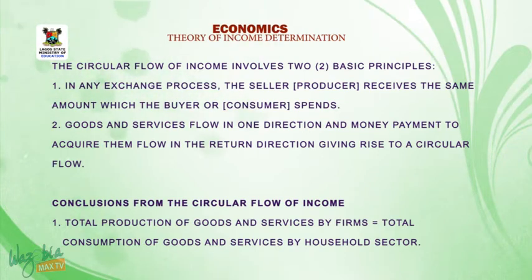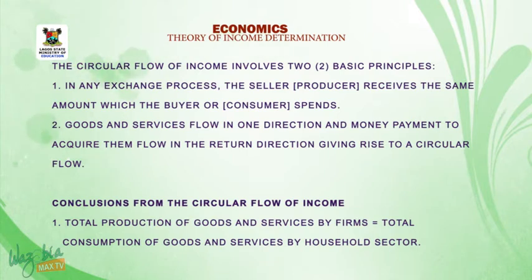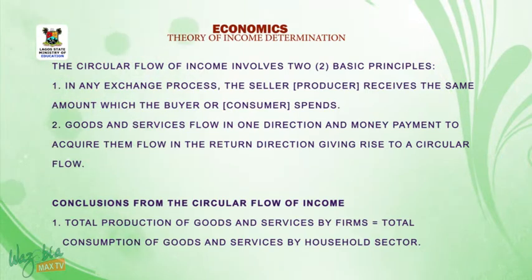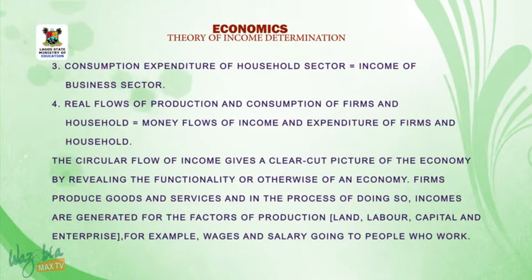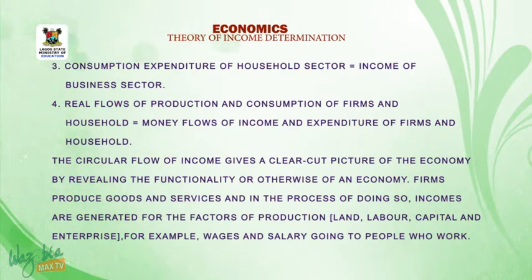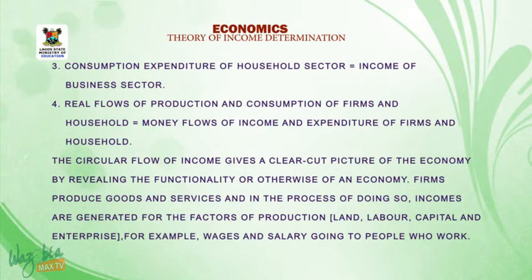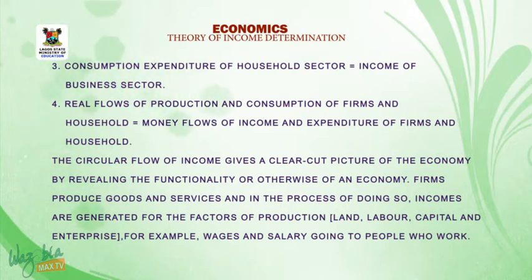Second, goods and services flow in one direction and money payments to acquire them flow in the return direction, giving rise to a circular flow. Conclusions from the circular flow of income: total production of goods and services by firms equals total consumption of goods and services by the household sector; factor payments by firms equals factor incomes of the household sector; consumption expenditure of the household sector equals income of the household sector; and real flows of production and consumption of firms and households equal money flows of income and expenditure.